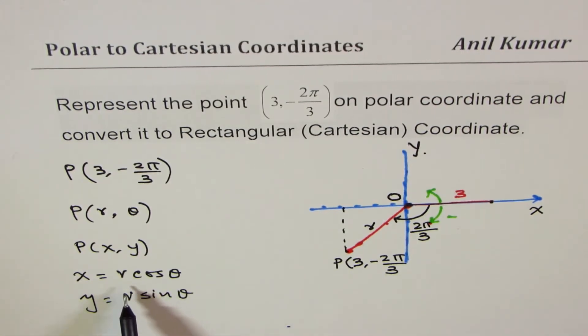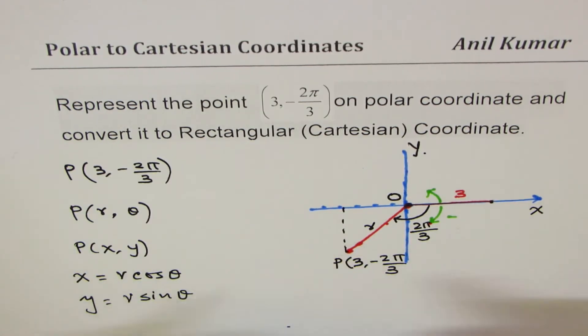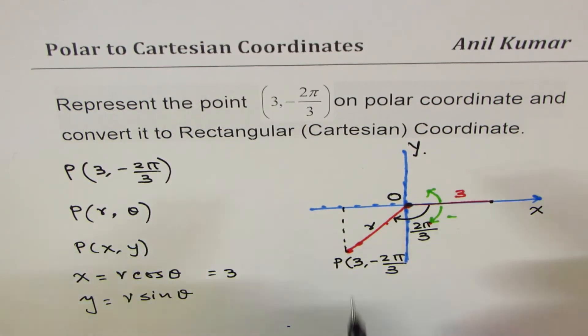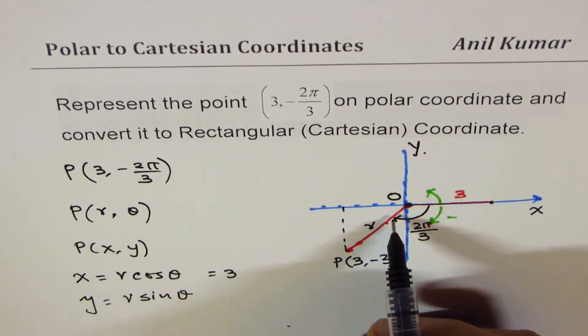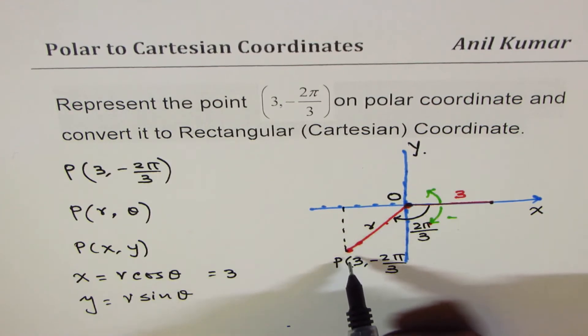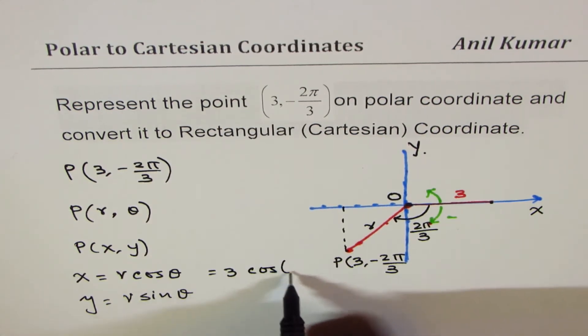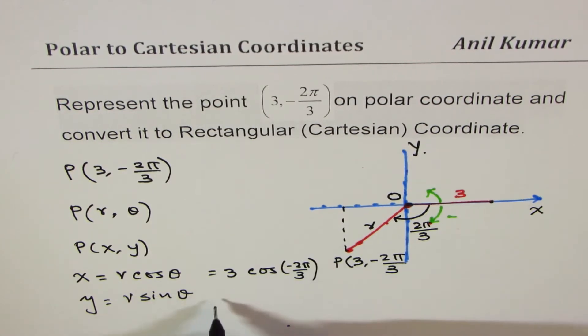In our case, R is 3 and the angle theta—you could take the acute angle and make the value negative, or you can take -2π/3 directly. So we could write this as X = 3 cos(-2π/3).